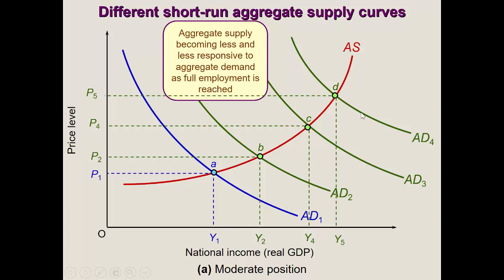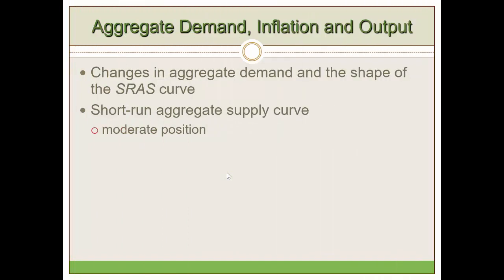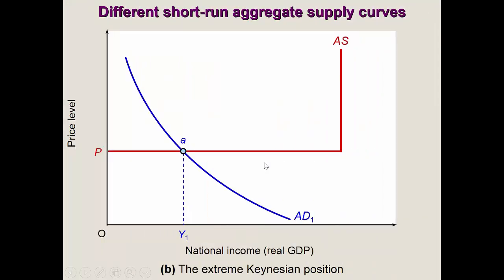Now let's look at the Keynesian case, where we examine an extreme situation at a lower level of output — in other words, during a recessionary period. In recessions, output is lower, and the supply curve largely remains flat. There is a bit of a bend, which makes it more realistic, but the key idea is what Keynes was arguing.